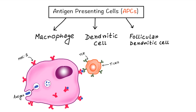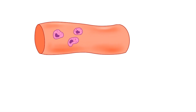Macrophages take up the antigen with a phagocytic process. This antigen is processed internally by MHC class 2 molecule, then the processed antigen is presented on the surface of the macrophage by MHC class 2 molecule. Macrophages are part of the mononuclear phagocytic system. Monocytes and macrophages are almost the same entity — when the cell is in general circulation it is called a monocyte, and when it exits circulation it is called a macrophage.